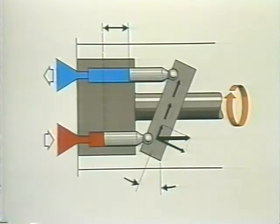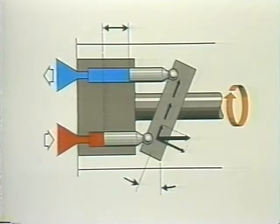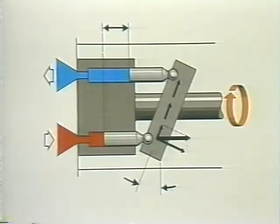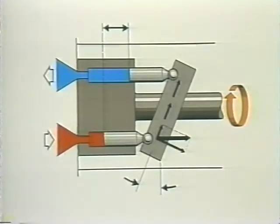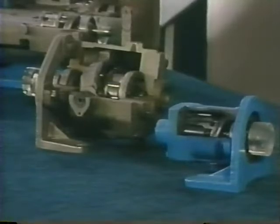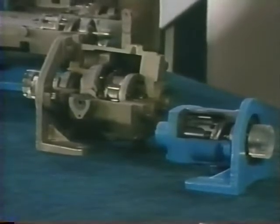In a motor, fluid is pumped into the cylinder bores on the inlet side, forcing the pistons out against the swash plate, which, because of its angle, causes them to rotate, carrying the cylinder block and output shaft around with them. While the torque of a motor, like the force of a cylinder, will be only what is required to move or support a load, fixed displacement motors can provide constant torque, regardless of their speed.